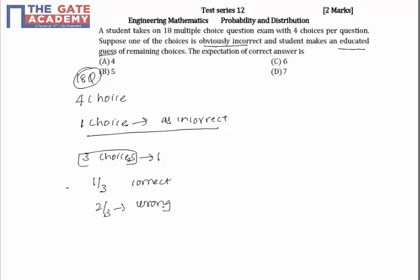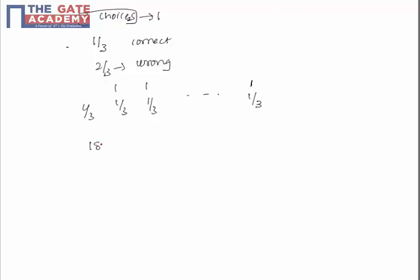For every question, the probability of getting the correct answer is 1/3 — for question 1, question 2, question 3, and so on up to question 18. So the total expected number of correct answers is 18 × 1/3 = 6. The answer is 6.